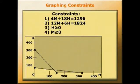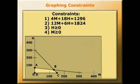Now we need to add the non-negativity constraints. We've shaded the areas where h or m would be less than zero. That means we've now established the feasible region A, B, C, D. So the possible levels of output meeting all of the constraints are within this box, and we can look at points A, B, C, and D.